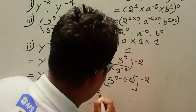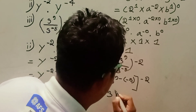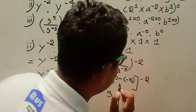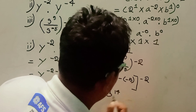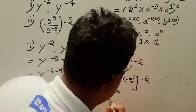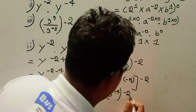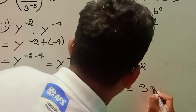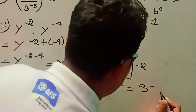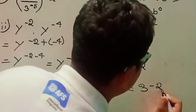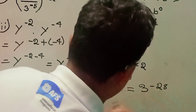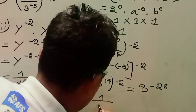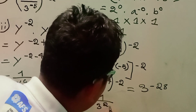Simplifying: minus minus gives plus, so 9 plus 5 equals 14. Then c to the power 14, whole to the power minus 2. Applying power of a power: 14 into minus 2 equals minus 28. So the answer is one by c to the power 28.